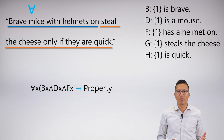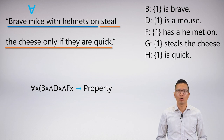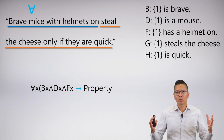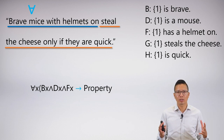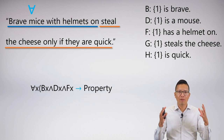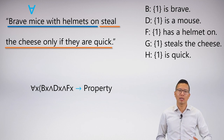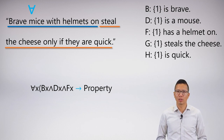I get: for all X, BX and DX and FX arrow... I'm saying that the group — the subject — has to have all these properties, which is why I use a conjunction for everything in the antecedent of my symbolization.